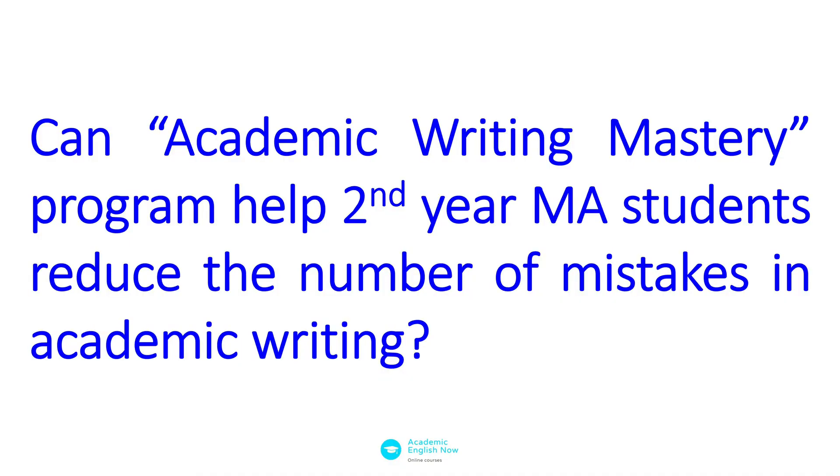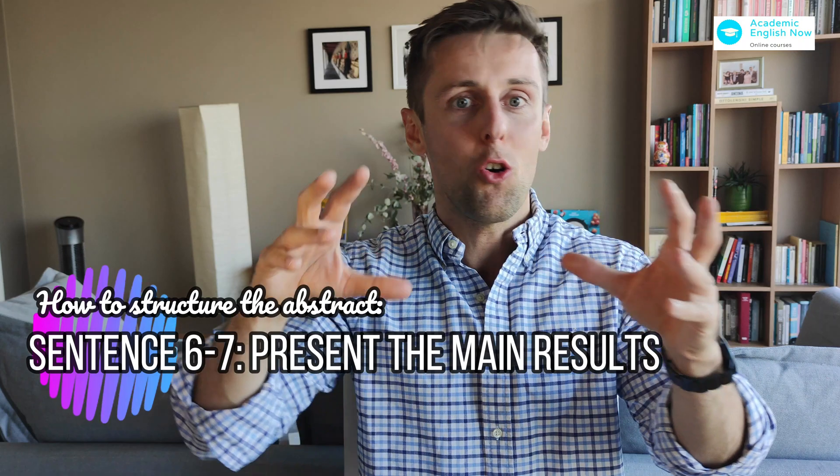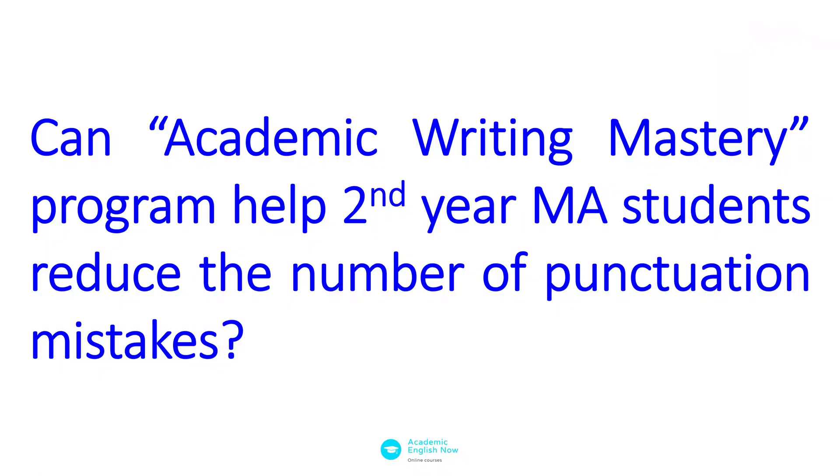So we could rephrase the question to: 'Can the Academic Writing Mastery Program help second-year master's students reduce the number of mistakes that they make in the paper?' That would be a better question, but it's still not perfect yet — it needs to be more specific. In our case, you probably want to focus on a specific type of mistake, such as grammar mistakes with past and present tense, or mistakes with references. So maybe we could rephrase it to: 'Can the Academic Writing Mastery Program help second-year master's students reduce the number of punctuation mistakes that they make in the text?'